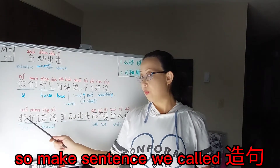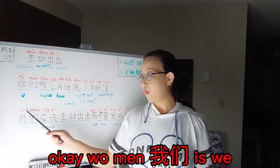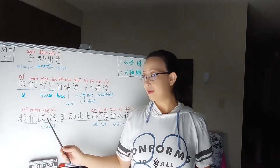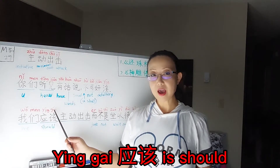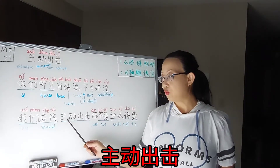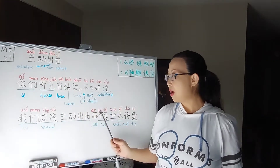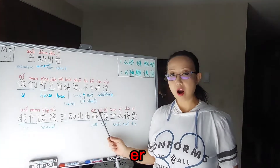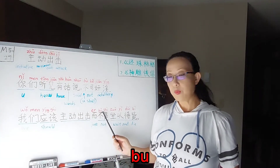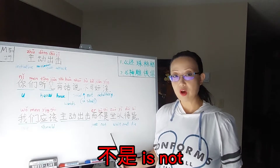And make a sentence from this 成语 — we call it 造句. 我们 is 'we'. 应该 is 'should'. 主动出击 — 而, 而 is 'but'. 不是 is 'is not'.